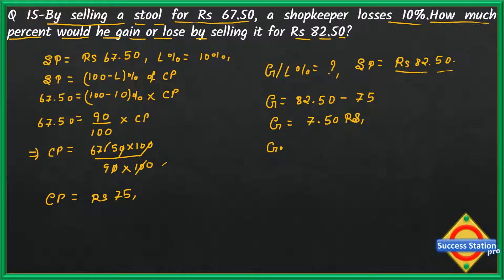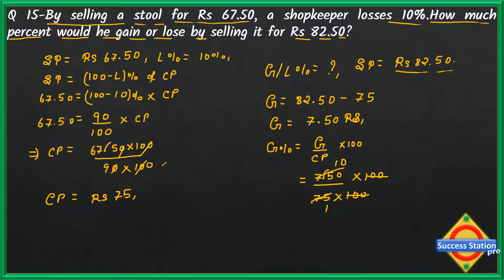Now we can find gain percent. Gain percent formula: gain percent is equal to gain divided by CP into 100. Gain value is 7.50 divided by cost price 75 into 100. The 100s cancel, so 7.50 divided by 75 — the value of gain percent is 10%. So we got the answer quite easily using that basic formula.